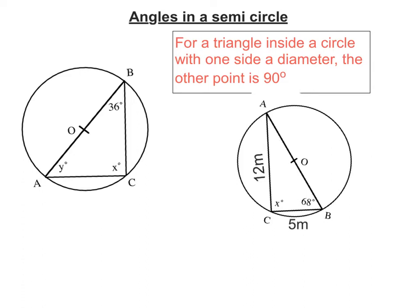So for instance, if we take this triangle here, ABC, we have a diameter here as it goes through the midpoint O. So this angle at C is going to be a right angle.